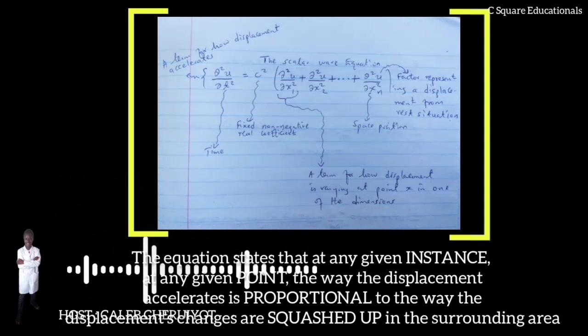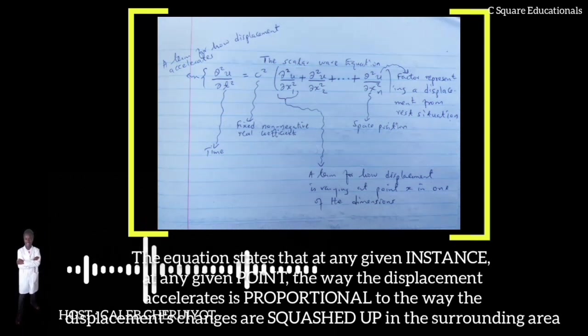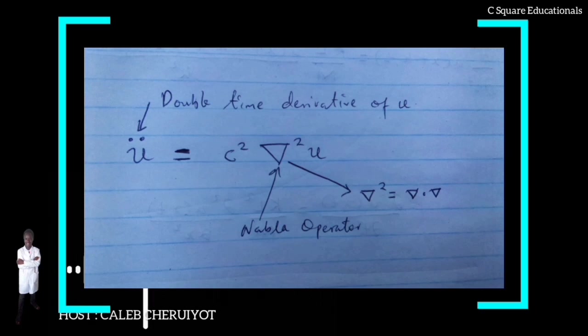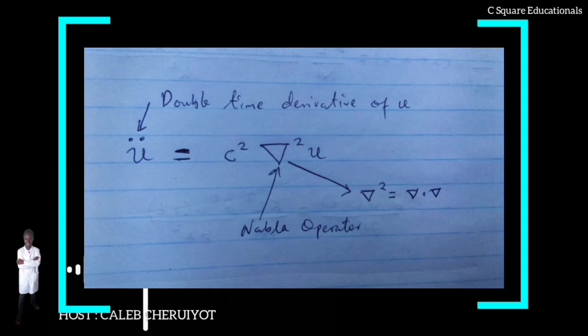Using the notations of Newtonian mechanics and vector calculus, the wave equation can be written more compactly as shown, where the double dot denotes the double time derivative of u, del is the nabla operator, del squared is equivalent to del dot del is the spatial Laplacian operator, not vector Laplacian.